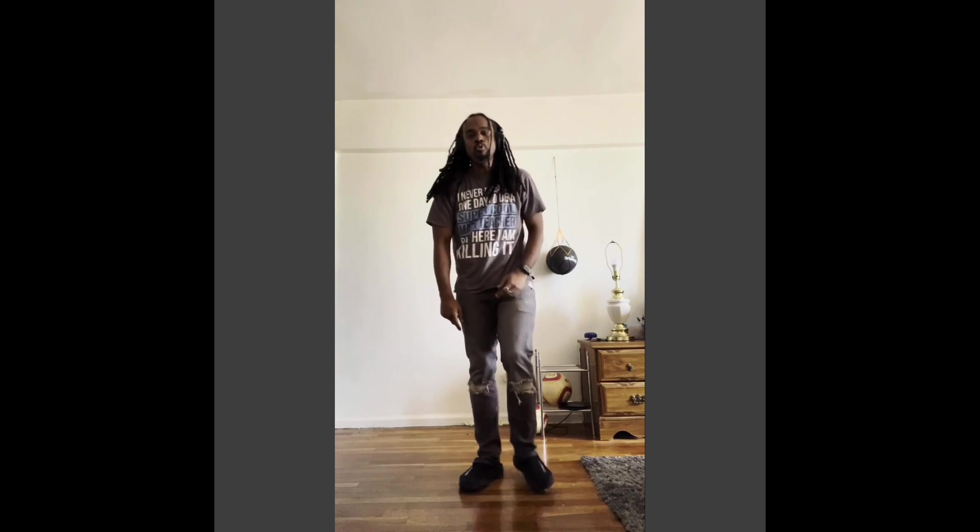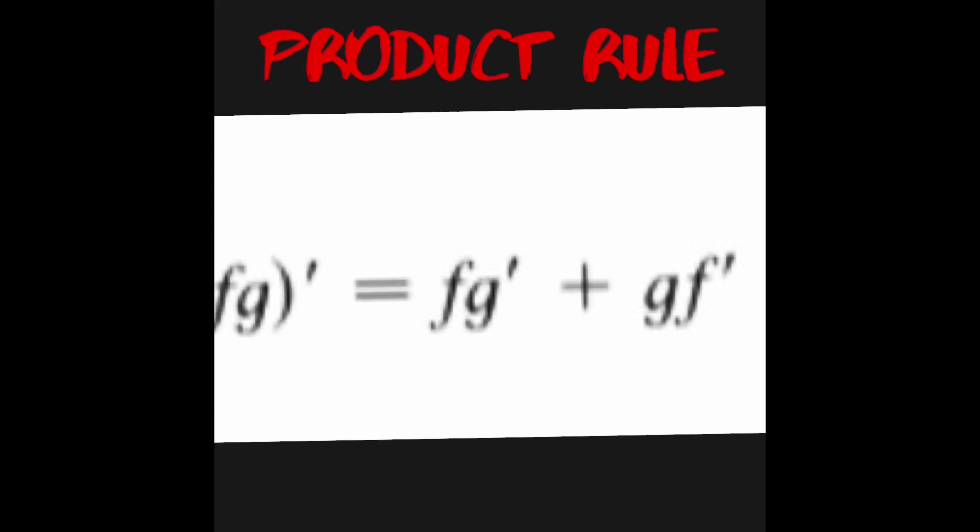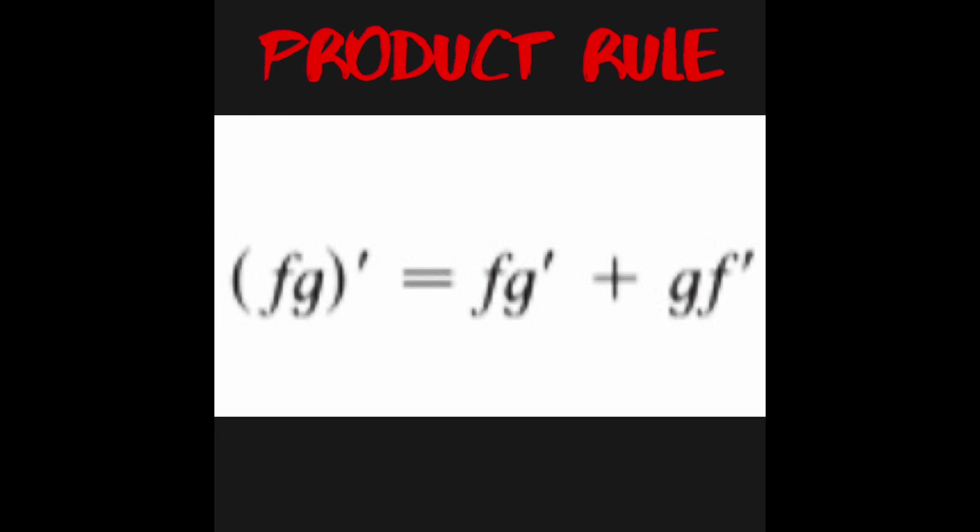Use the product rule and then the quotient rule too. F of x times derivative of g of x, sum with g times derivative of f. F of x times derivative of g of x, sum with g times derivative of f.